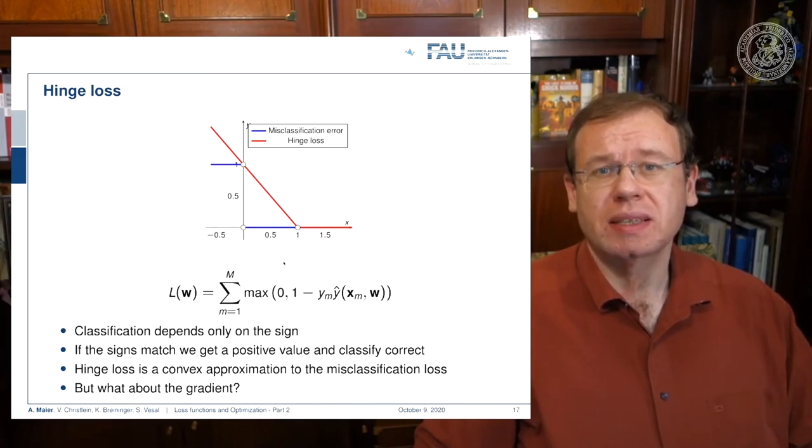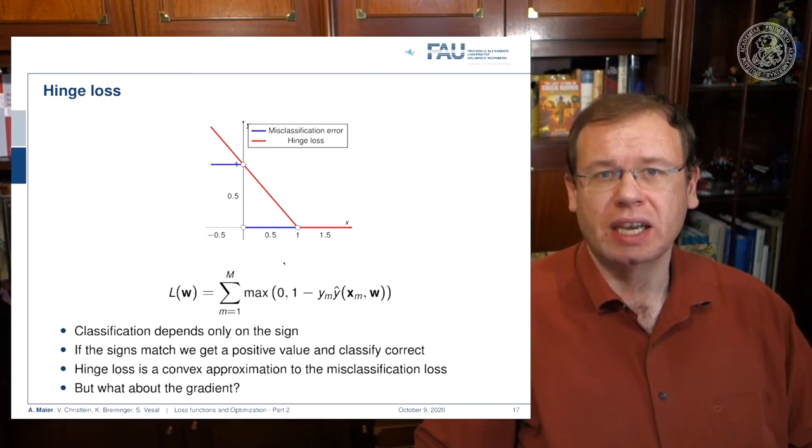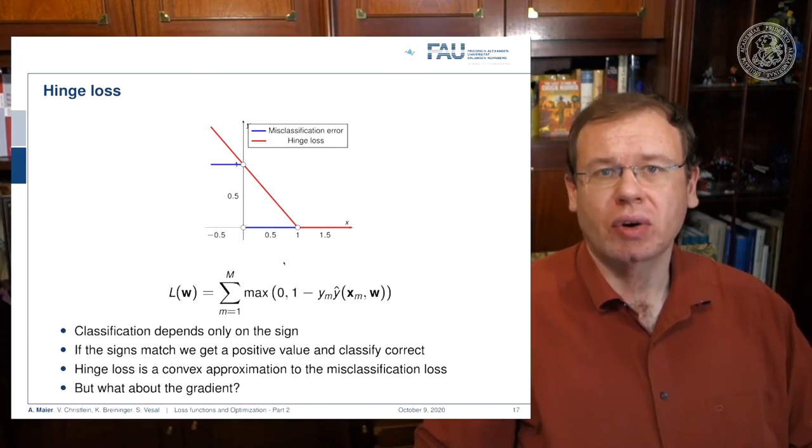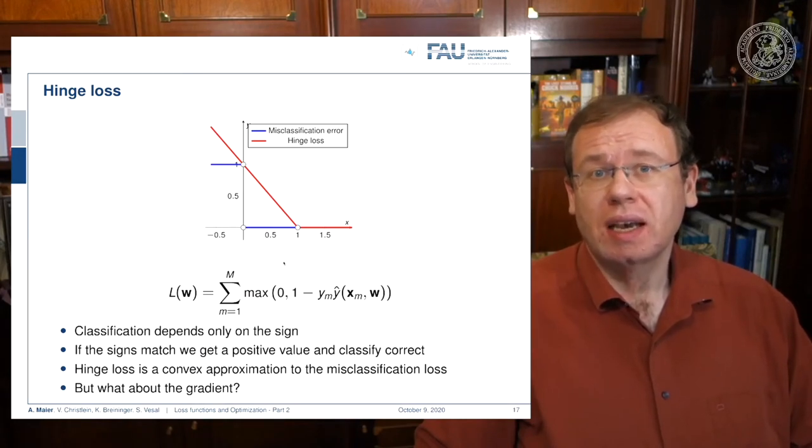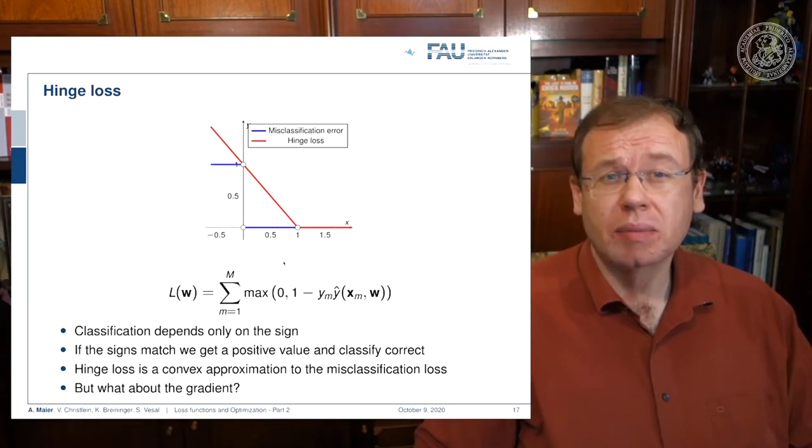Thus, it's a very interesting way of formulating the same problem. We have implicitly the situation that we only consider the misclassified samples in this loss function. It can be shown that the hinge loss is a convex approximation of the misclassification loss. One big thing about this optimization problem is of course the gradient. The loss function here has a kink, thus the derivative is not continuous in the point x equals one.